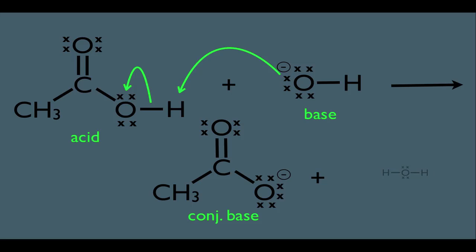When a carboxylic acid acts as an acid, it ends up as its conjugate base, and as a side product we get water. Looking at the electron accounting: the electrons on the oxygen connected to the hydrogen now form this new bond, meaning this hydrogen on the carboxylic acid is now on the water. The electrons between oxygen and hydrogen jumped up onto the oxygen and now exist as a lone pair.